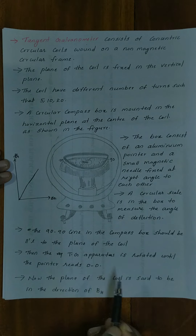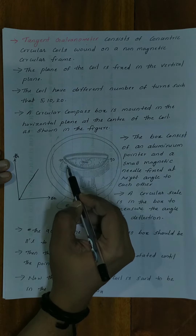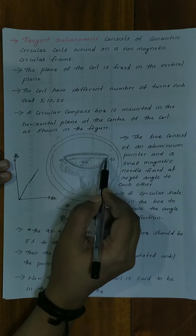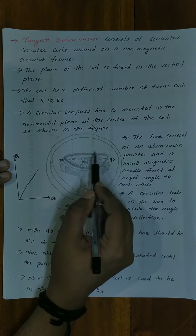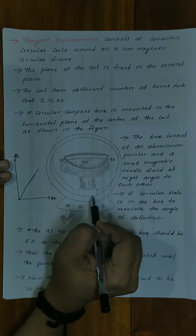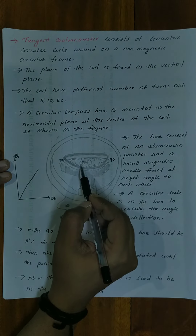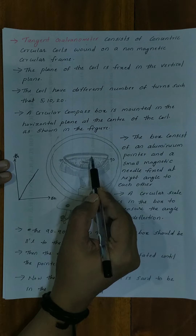First, we adjust the compass box so that the 90-90 line is aligned. Then the whole apparatus is adjusted so that the aluminum pointer reads 00.